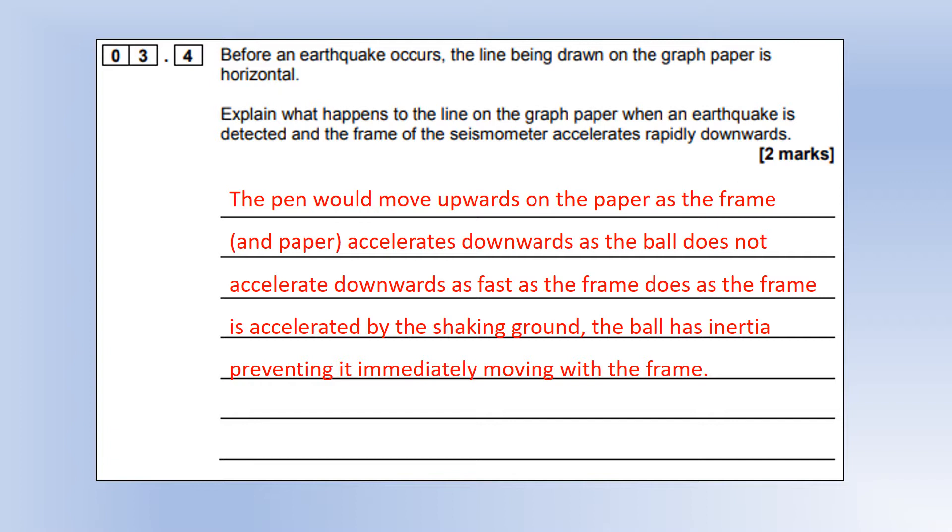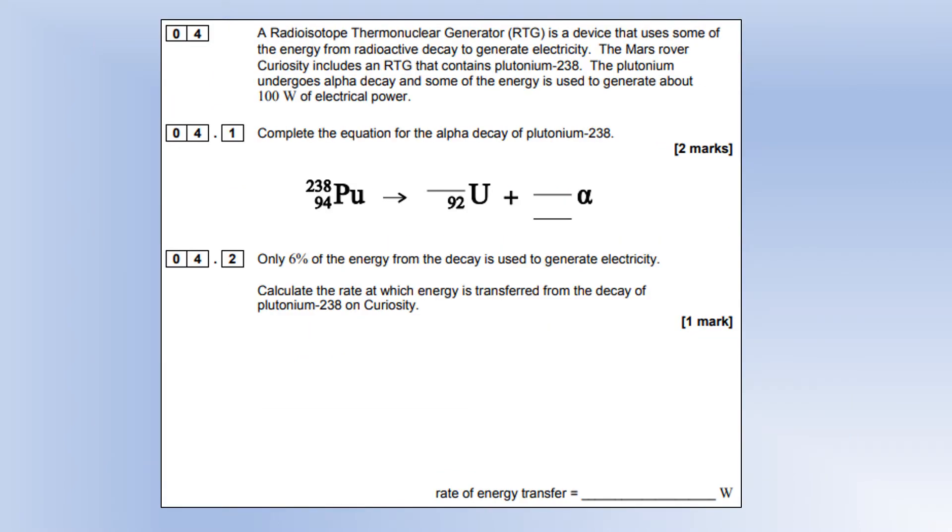Moving on to radioactivity: a radioisotope thermonuclear generator (RTG) is a device that uses energy from radioactive decay to generate electricity. The Mars rover includes an RTG with plutonium-238, which is an alpha emitter used to generate about 100 watts of electrical power. Complete the equation for alpha decay: an alpha particle is two neutrons and two protons, which means the uranium must be 234 to make the nucleon number balance.